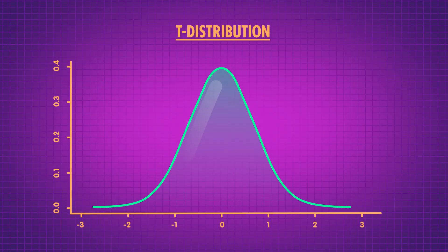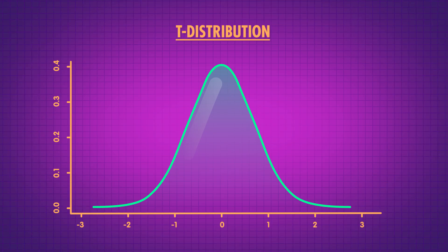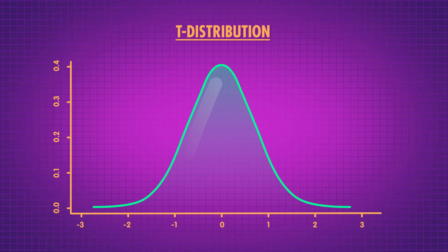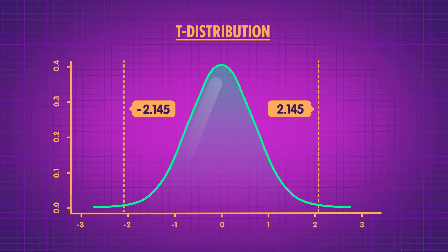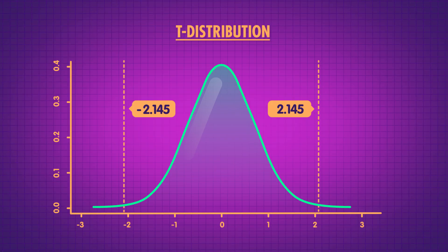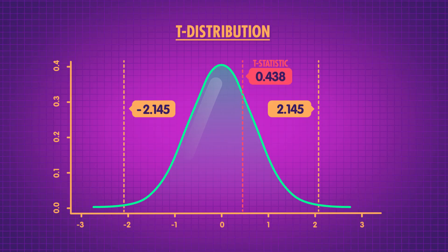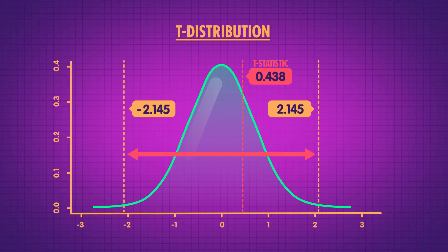To calculate our critical t-value, we need to find the t-values which correspond to the top 5% most extreme values in our t-distribution. Usually a computer or calculator will do this for you. The cut-offs for our specific problem are about negative 2.145 and 2.145. We have two cut-offs because we're doing a two-tailed test — we want to reject the null if coffee from Caffeined is better, or if coffee from The Blend In is better. We can already tell that we should fail to reject the null, since our t-statistic of about .44 isn't close to negative 2.145 or 2.145.